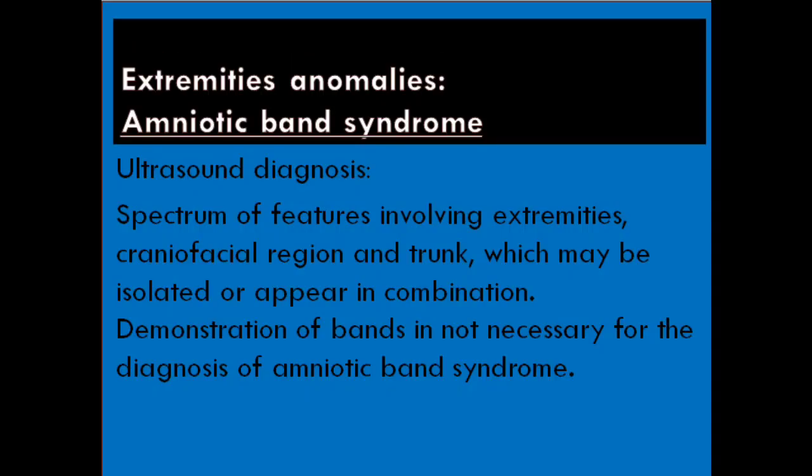The second abnormality: amniotic band syndrome. Ultrasound diagnosis. There is a spectrum of features involving the extremities, craniofacial region, and trunk, which may be isolated or appear in combination. Demonstration of bands is not necessary for the diagnosis of amniotic band syndrome.